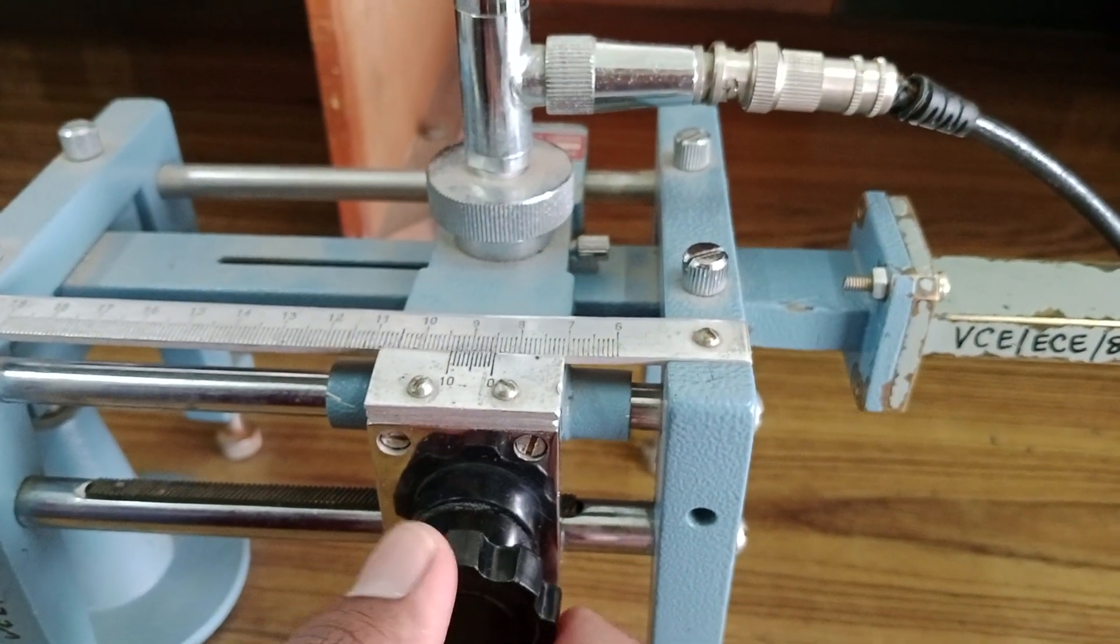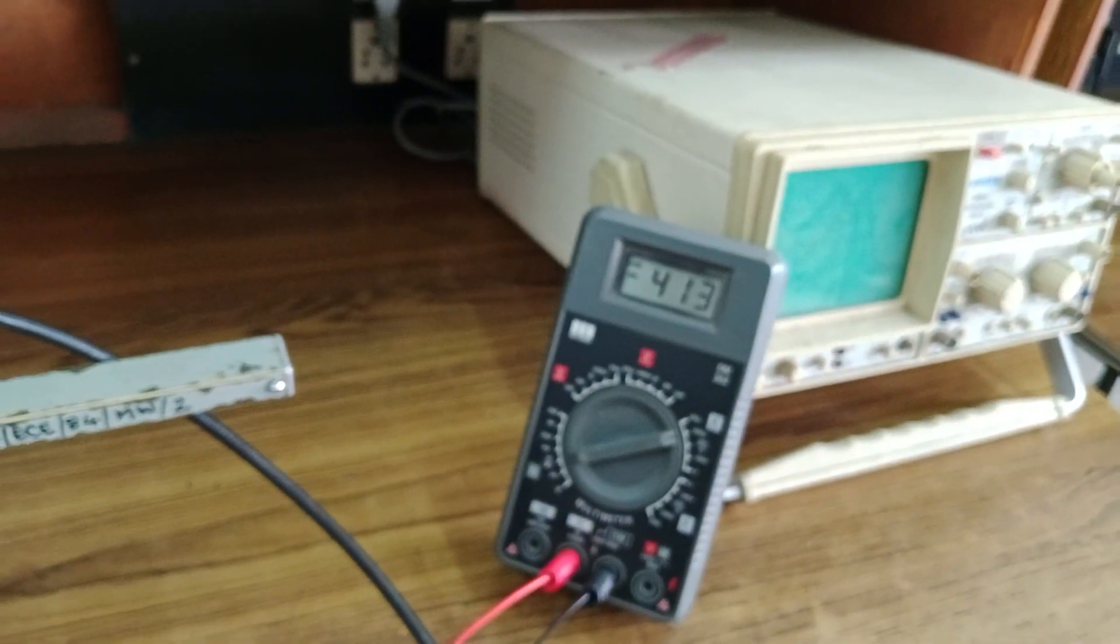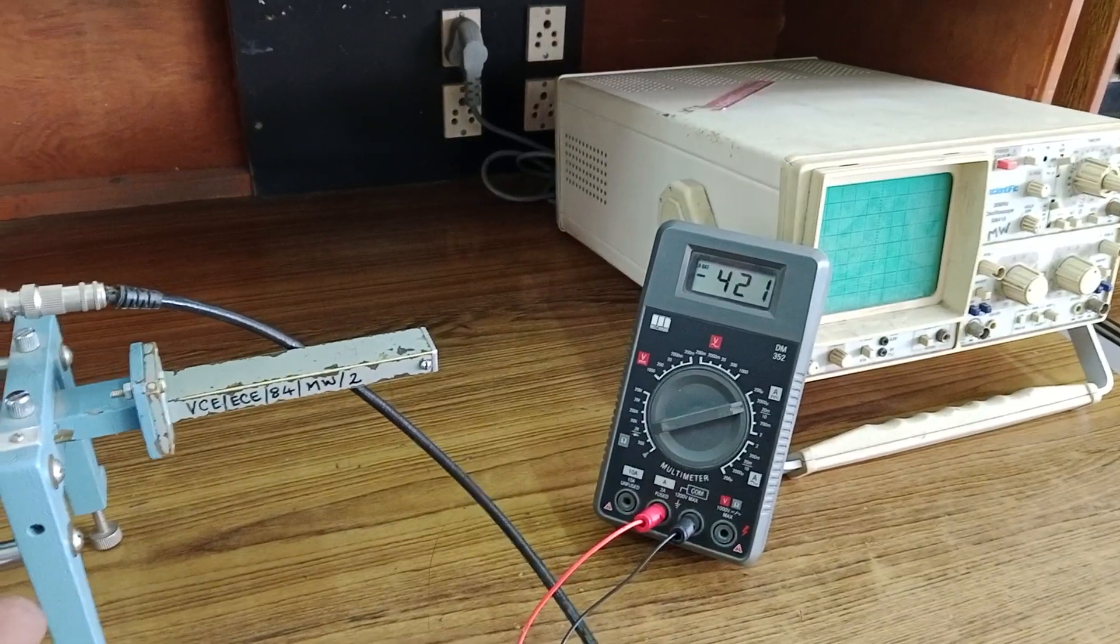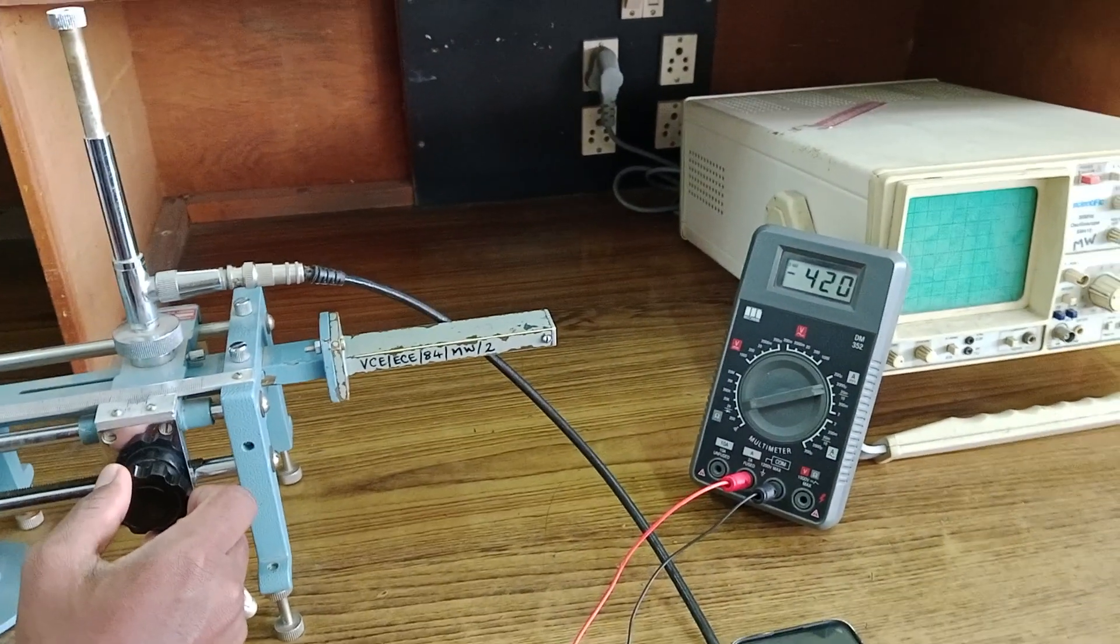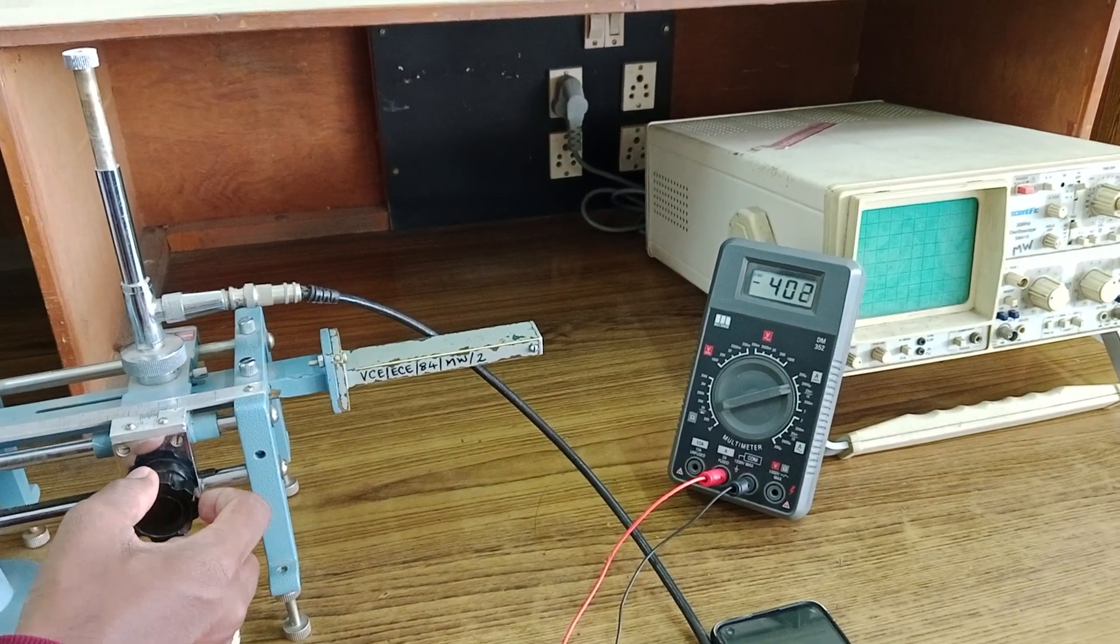In the same way, you have to vary this slightly until you get a maximum and a minimum. For suppose if you see here, once I am moving it, I got something like 420 milliamps of current. And if I am further moving it, it is getting reduced.